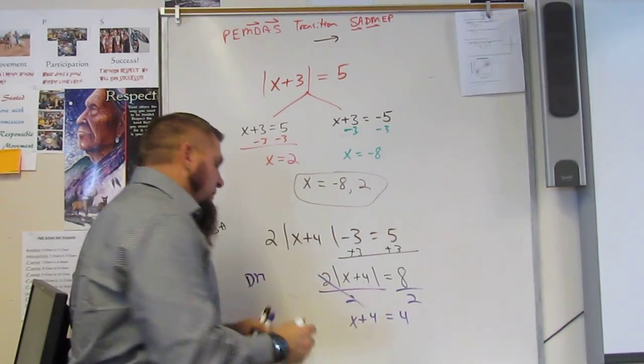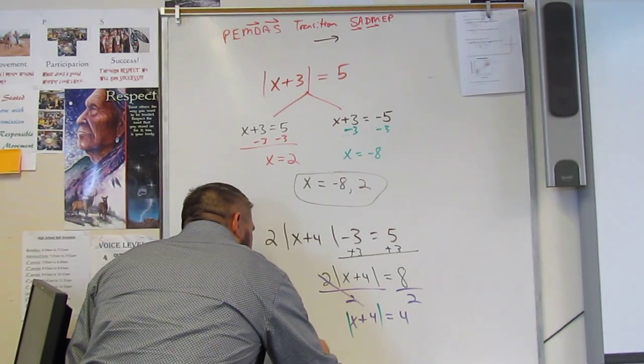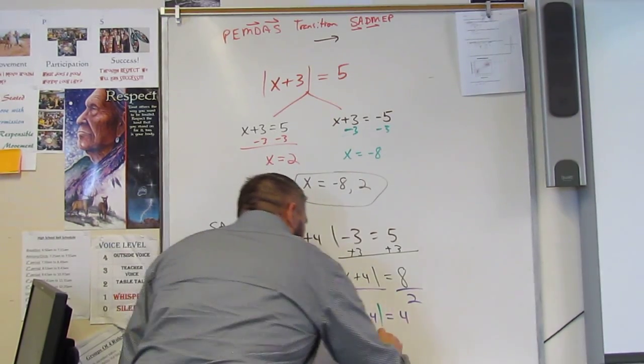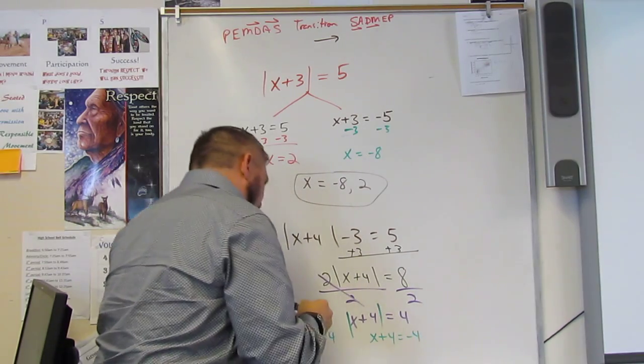Now, this is the absolute value of x plus 4. So I'm going to do x plus 4 equals 4 and I'm going to do x plus 4 equals negative 4. And then I solve.